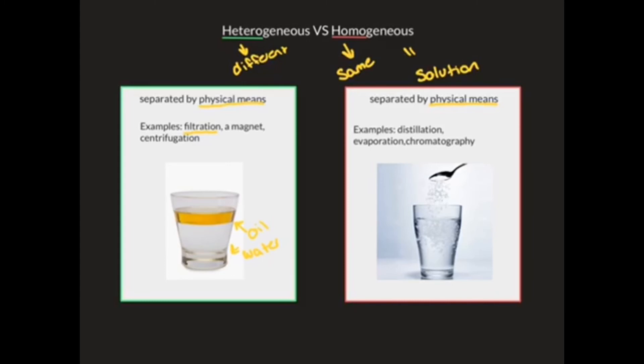Another way you could separate heterogeneous mixtures is by using a magnet. For example, if you have water and you add a metal such as iron, Fe, you can separate it using a magnet.